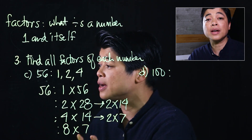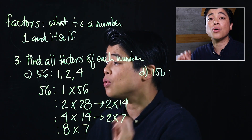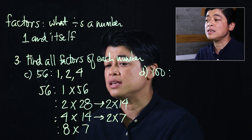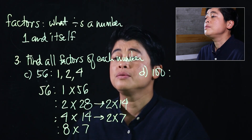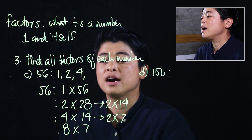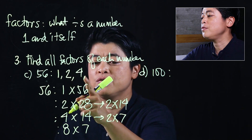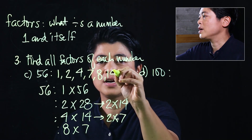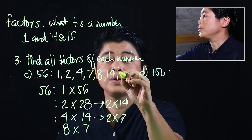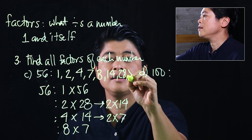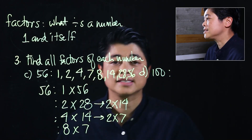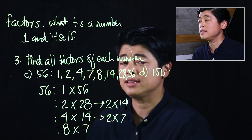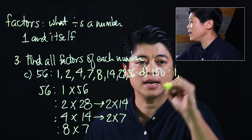We know when to stop when we have two pairs of numbers that are close to each other or are the same — that means we've covered everything. So the factors of 56 are: 1, 2, 4, 7, 8, 14, 28, and 56.